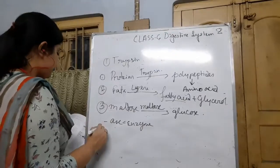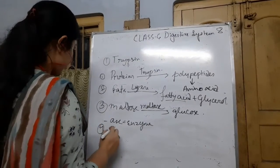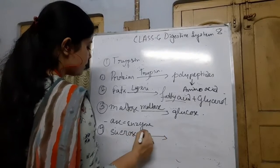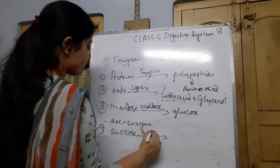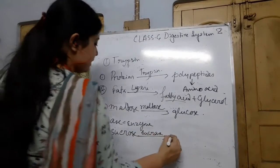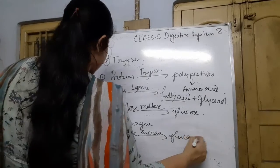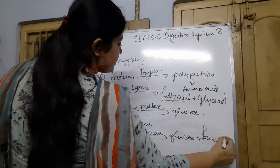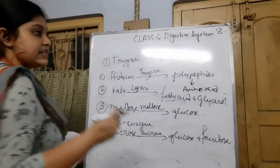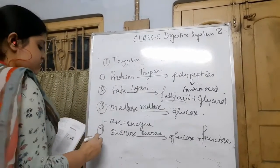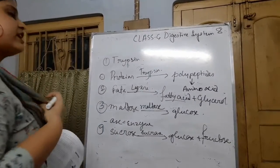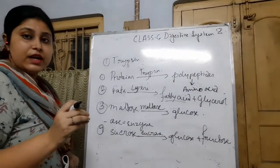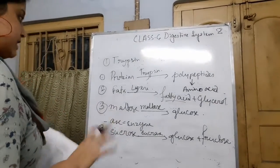Some other enzymes are also present — sucrase, which acts on sucrose and forms glucose and fructose. These are monosaccharides, the single units of carbohydrate. So all carbohydrate digestion is completed in this part, producing the smallest units of carbohydrate.